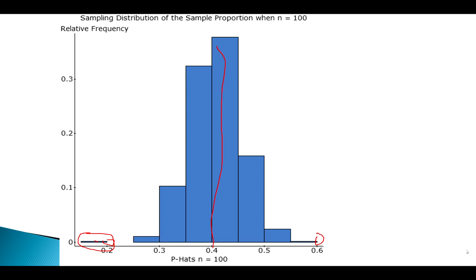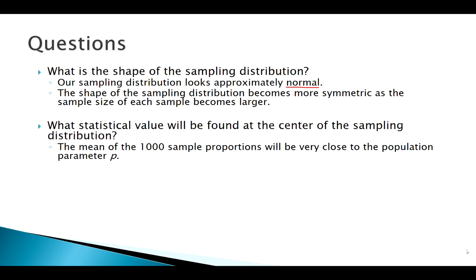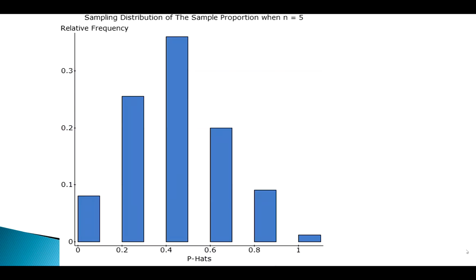But I think the big thing here is that I think we'd be safe to say that that distribution looks symmetric in fact, it looked pretty normal. Our estimate was still accurate. The center was still where we wanted it to see, and it definitely got smaller. So let's compare the two again.